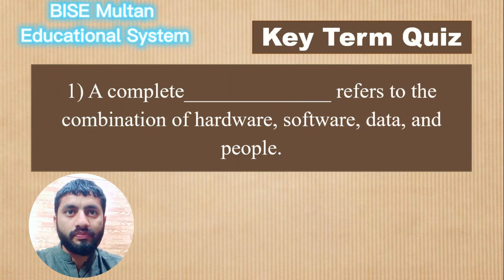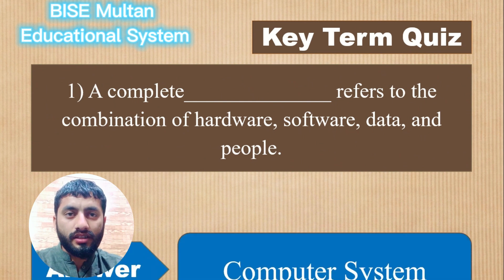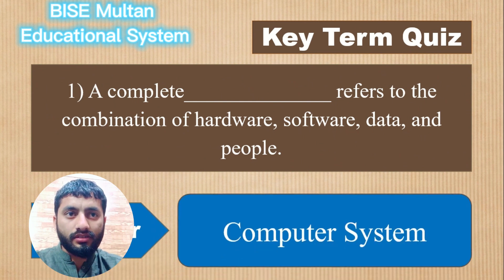Question 1. A complete blank refers to the combination of hardware, software, data, and people. The answer is Computer System.